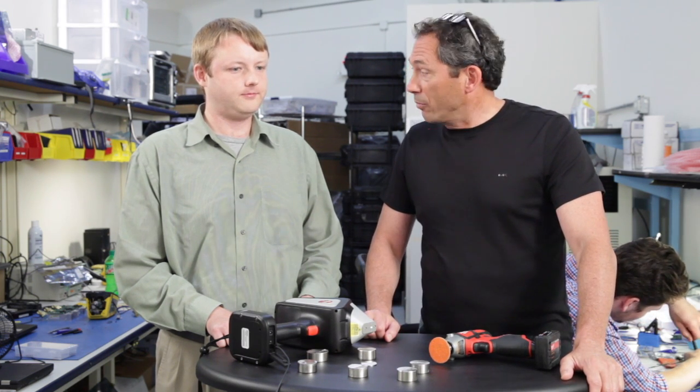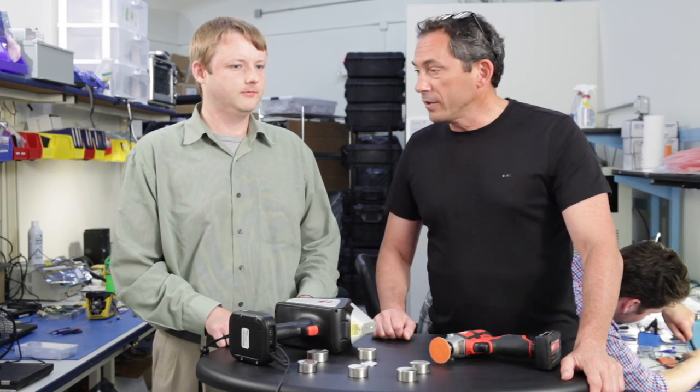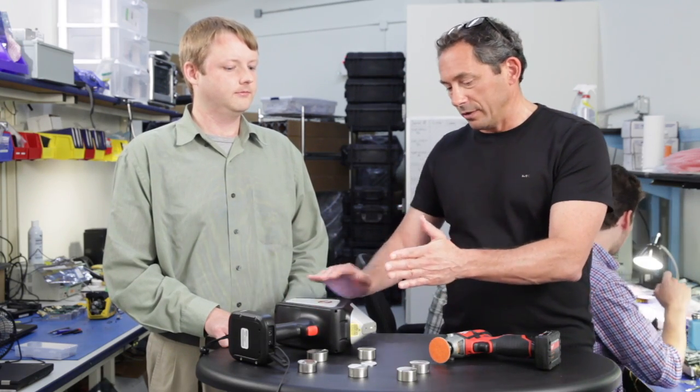So welcome, Brendan. So we're going to shoot some samples in a few minutes, but let me ask you a quick question about this. First of all, this is the only handheld on the planet that can measure carbon at low enough concentrations to separate L-grades, standard grades of stainless, and H-grades of stainless.